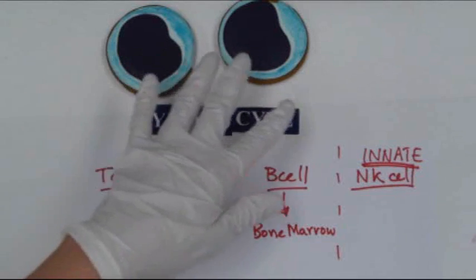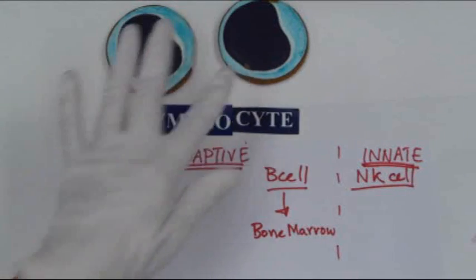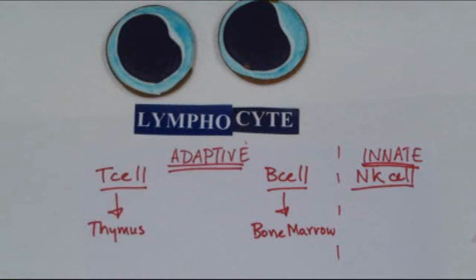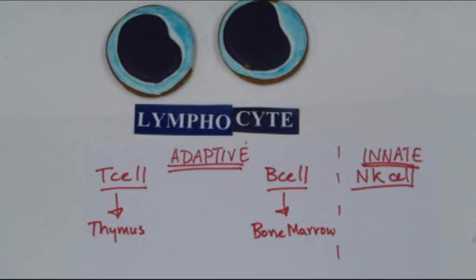When we look at lymphocytes under the microscope, we cannot tell just by looking at them whether they are a T cell, a B cell, or an NK cell. It is only by using special molecular markers that we are able to tell the difference.